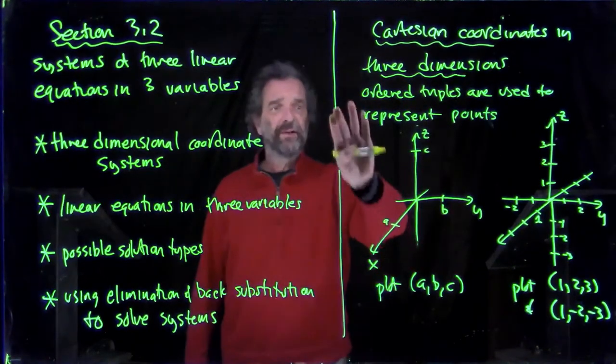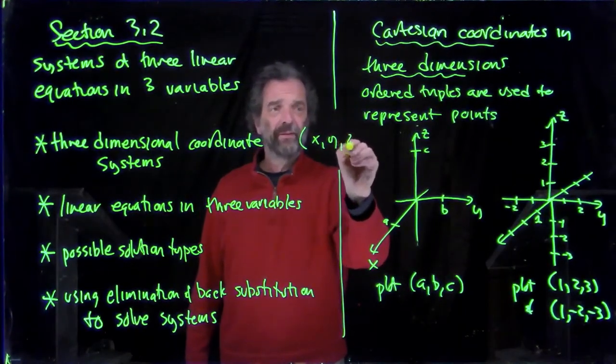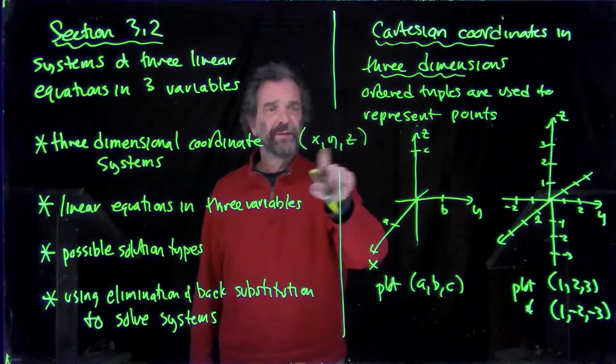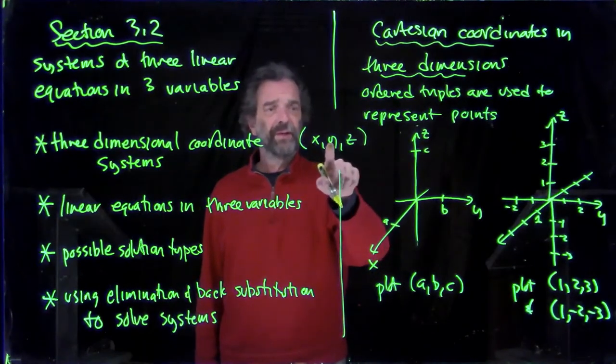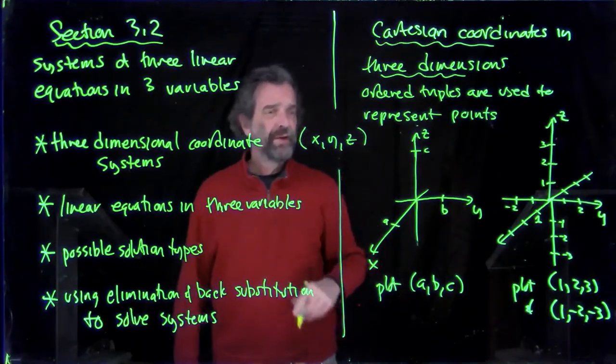So triples look like x, y, z like that. So you've got parentheses, you've got three numbers, there's commas in between them. First, second, and third coordinates of the point.